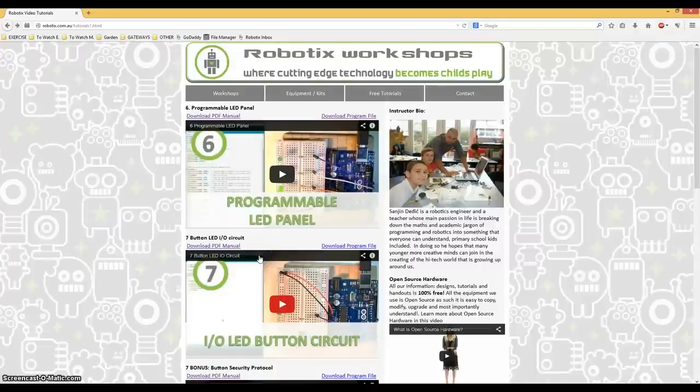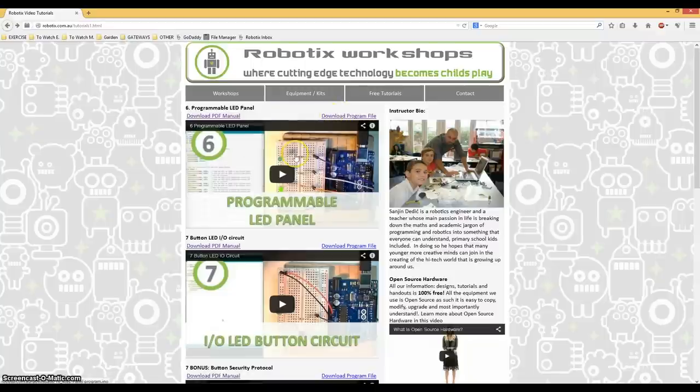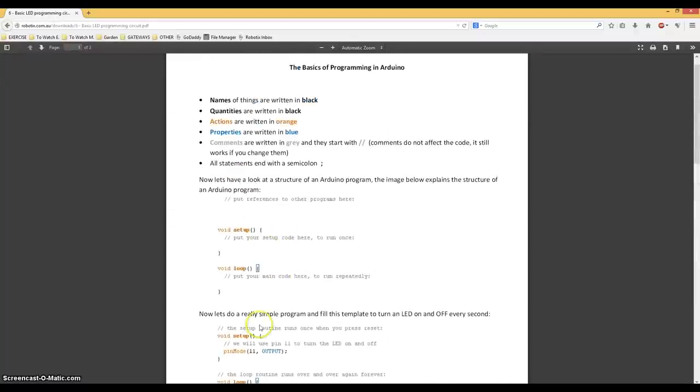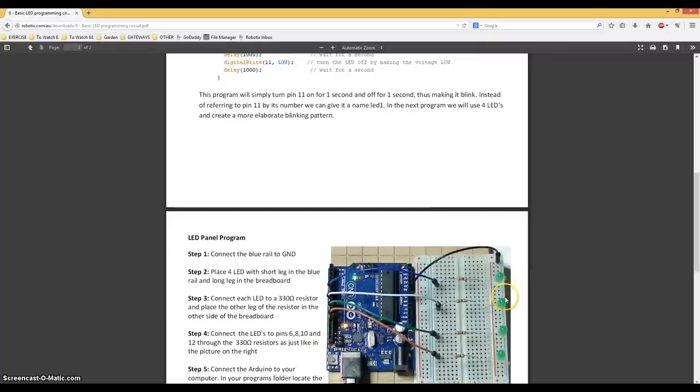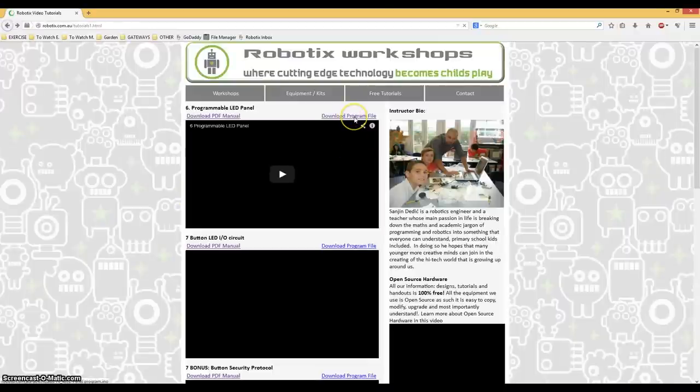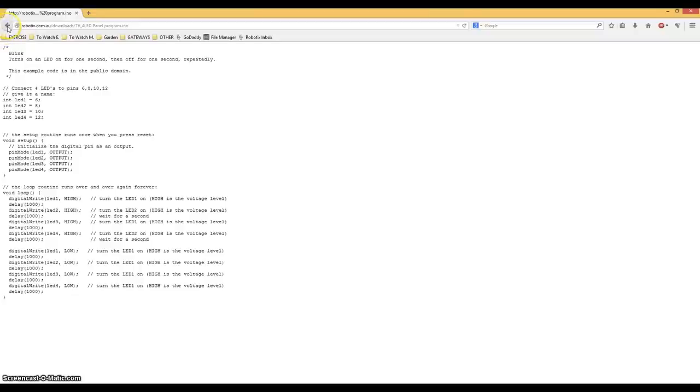Guys, just letting you know that every single one of these tutorials comes with a downloadable PDF manual and the finished program. The PDF manual usually contains more information about the program and step-by-step instructions that are illustrated on how to build a circuit. And the downloadable program will be sure to save you some time. So, hop on over to robotix.com.au.